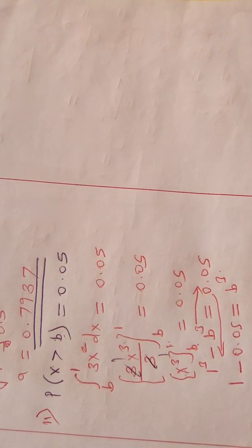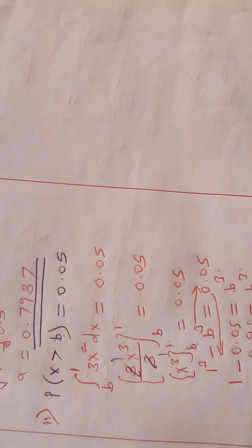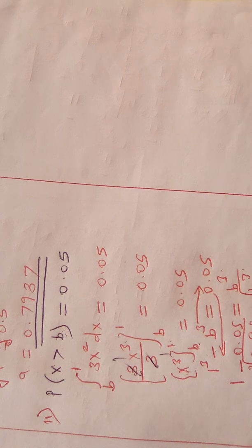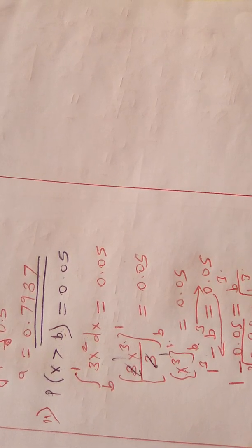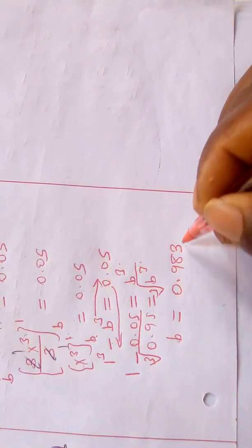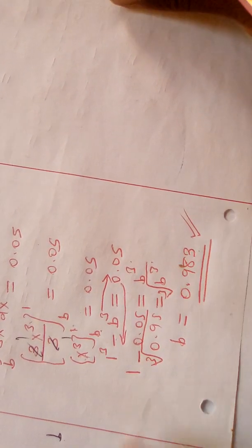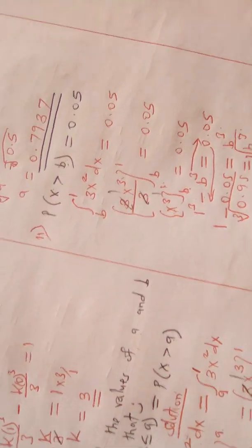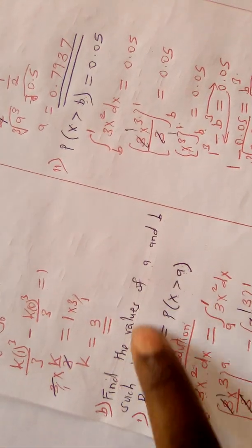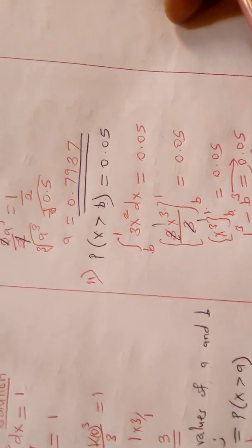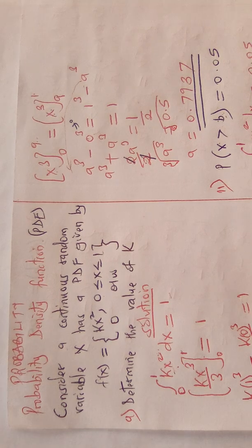Collecting like terms: 1 minus 0.05 = b cubed, so 0.95 = b cubed. Taking the cube root of 0.95 gives b = 0.983. Therefore, our final answers are a = 0.7937 and b = 0.983. That completes Part B. I'll meet you in the next class — bye bye.